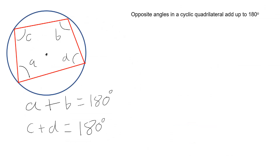Our next theorem is that if you have four points on the circumference of a circle joined into a quadrilateral, the opposite angles of this quadrilateral add up to 180. We call this a cyclic quadrilateral. So A plus B is 180, and C plus D is 180.